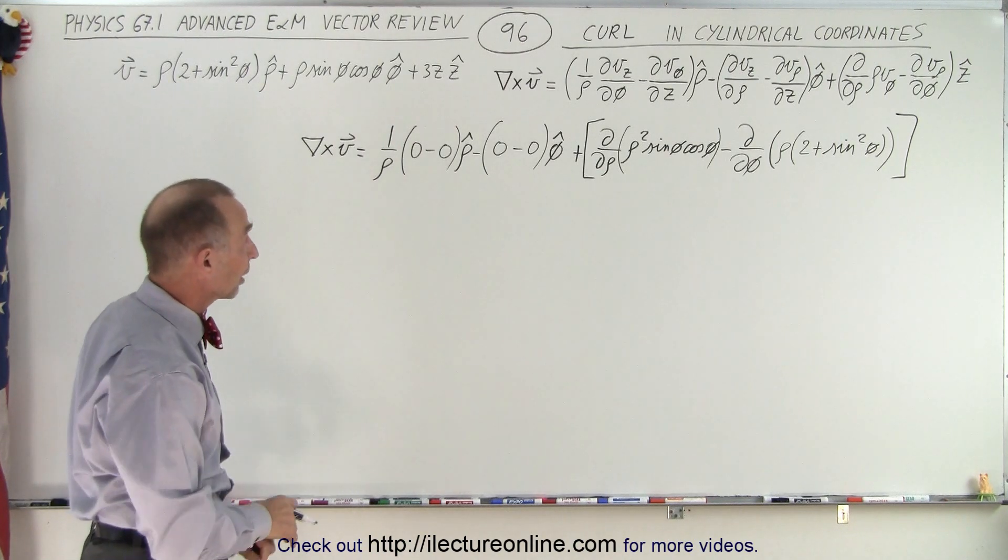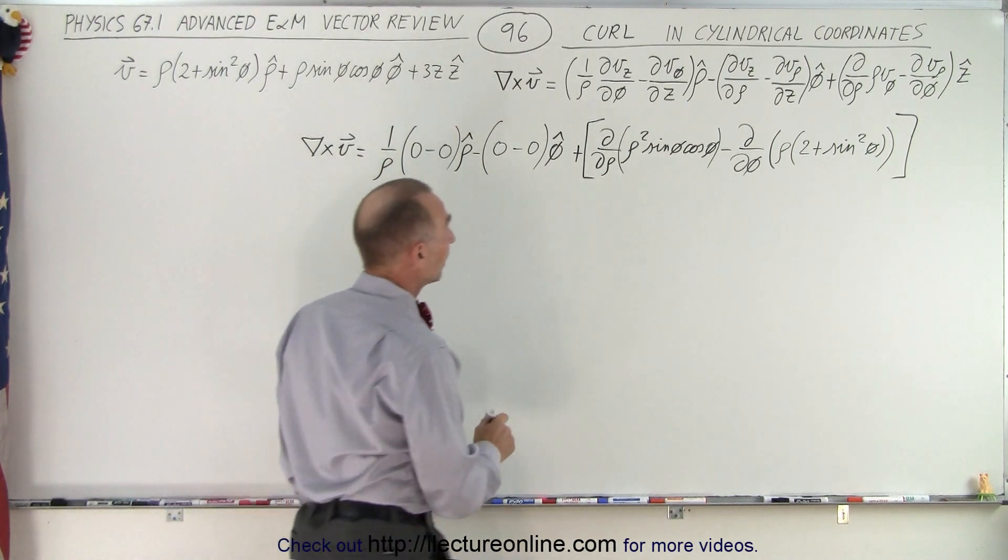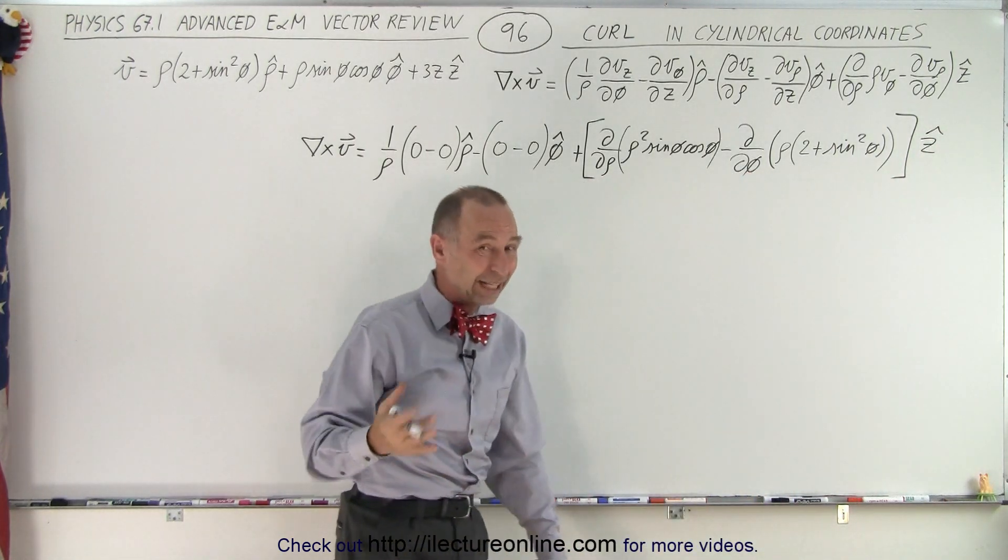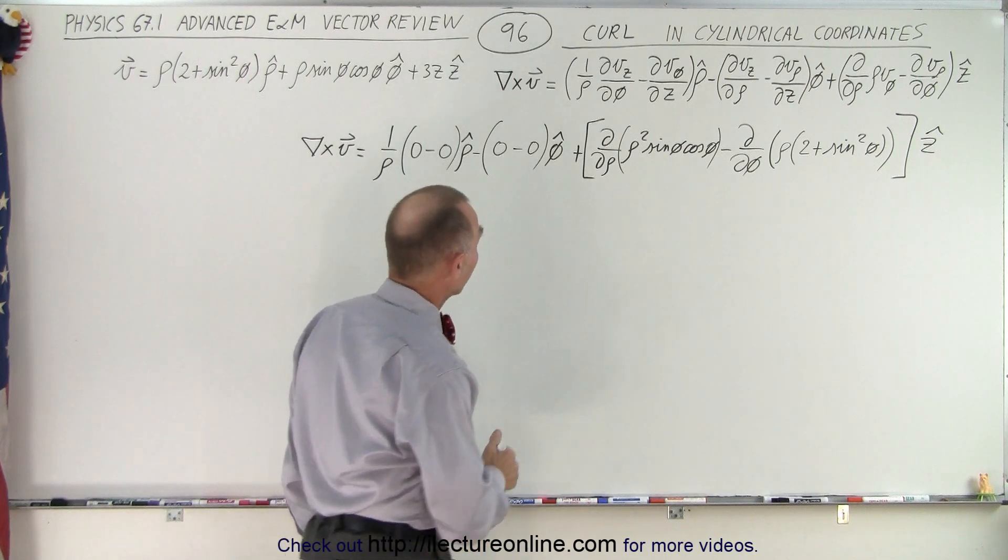So we do have to do something there for that third component. And of course, I can't forget the z unit vector because when we take the curl, we do indeed end up with a vector quantity.